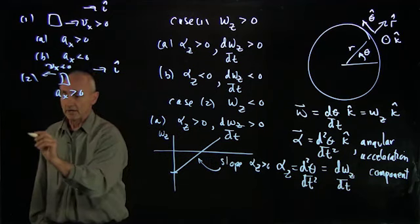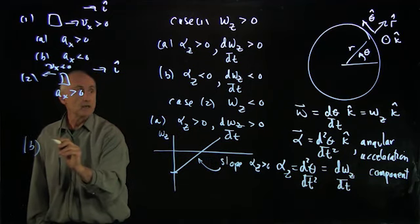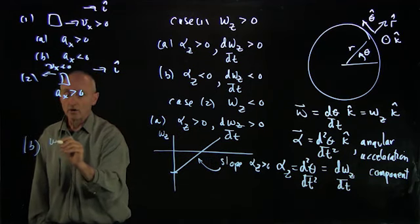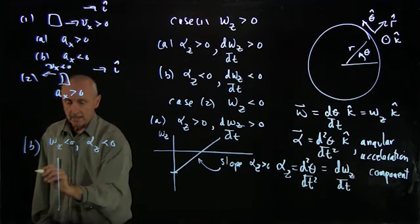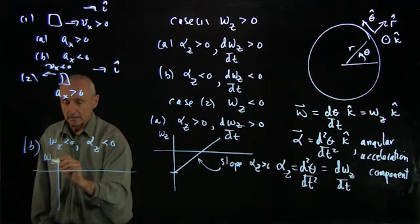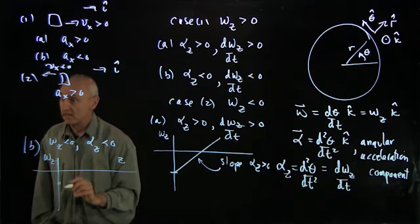Now, our final case, and I'll put it down here, b, is this is, again, where ω_z negative and α_z negative. It's always helpful to see this immediately with the graph. ω_z is negative. Here, α_z, which is the slope, is also negative.